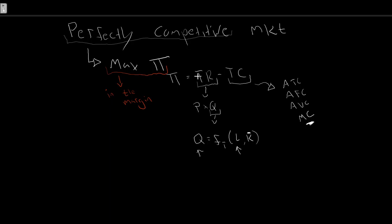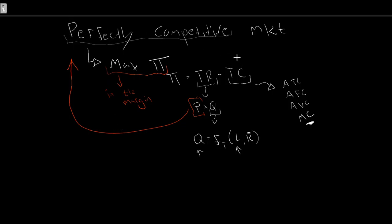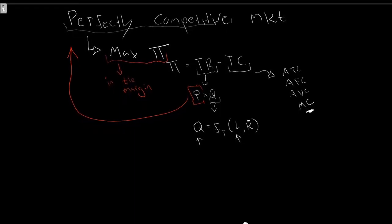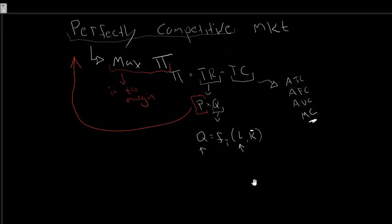We've taken a look at all of this, but we've yet to talk about the price aspect. It turns out the ability to choose this price, or the effect that price has on our whole profit maximization situation, all comes back to what type of market structure we have. In this case, it all comes back to the fact that we are in a perfectly competitive market.